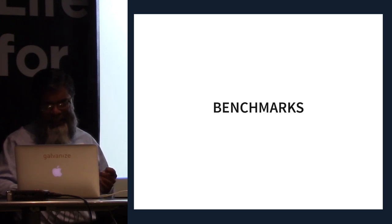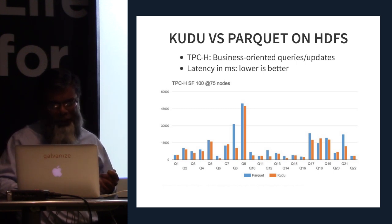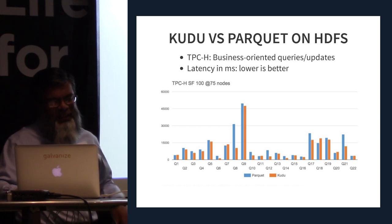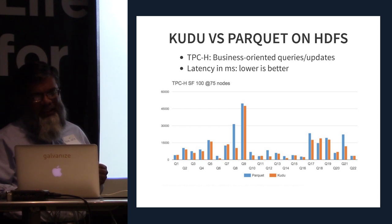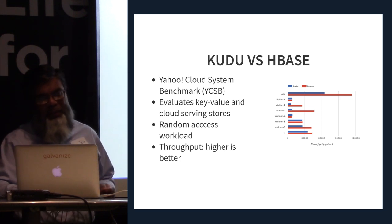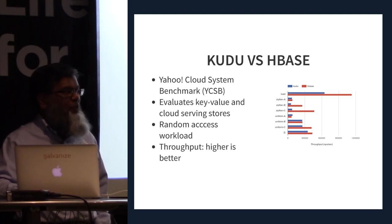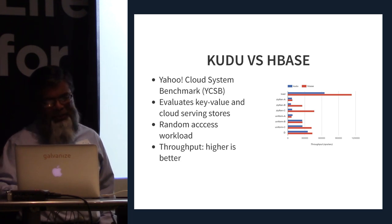Here are some benchmarks. On TPCH benchmark numbers, Kudu is shown in orange, and lower is better. On some benchmarks it's lower, on some slightly higher — basically about on par with Parquet, possibly slightly worse. Compared to HBase on throughput, HBase is better, so Kudu is not quite as good. It's slightly bad at everything rather than being really bad at one thing, which is what HBase and HDFS are by themselves.